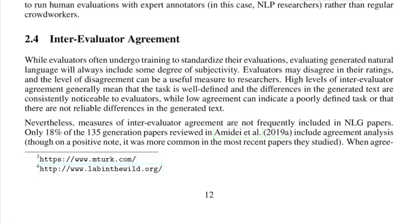Next, we discuss inter-evaluator agreement — a measure used to calculate an agreement score between evaluators. Since the task is complex and the model is generative, disagreement among evaluators is expected. Higher inter-evaluator agreement means the task was well defined, instructions were given properly, and the generated text was consistent. Low inter-evaluator agreement could signify the task was not well defined, instructions were unclear, evaluators were confused, or the generated text itself was unreliable.